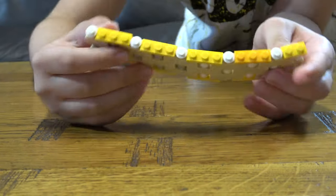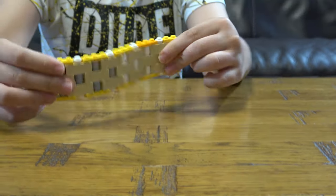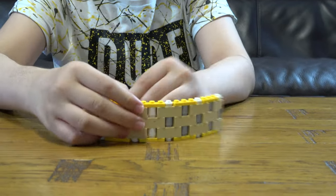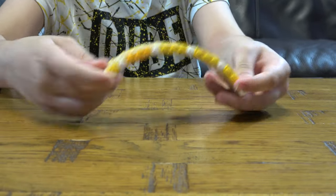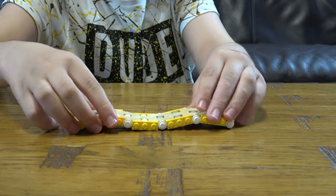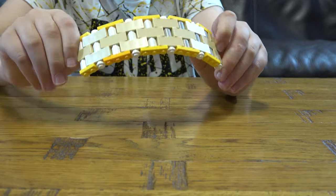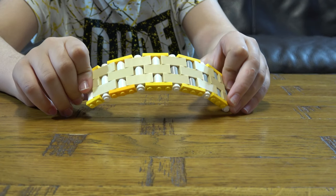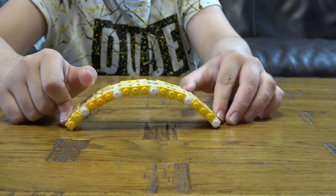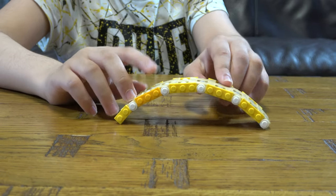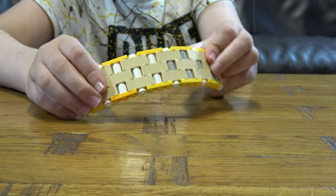So here's the finished bendy wall. As you can see you can bend it like this, you can keep it circular, you can bend it. You can build like a wall, you can build it for castles, bridges and more things that you could think of.